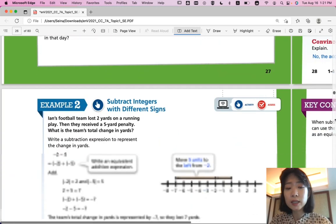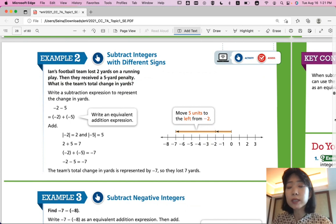Okay, let's look at the next page, example 2. Subtract integers with different signs. Ian's football team lost 2 yards on a running play. Then they received a 5 yard penalty. What is the team's total change in yards? So first they lost 2 yards. And then they lost another 5 yards by penalty. So, total, they lost negative 7 yards. That's sad.